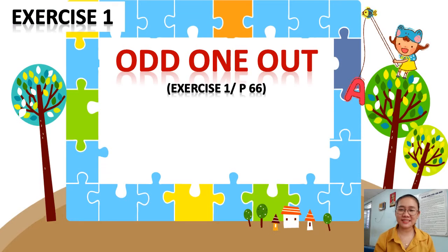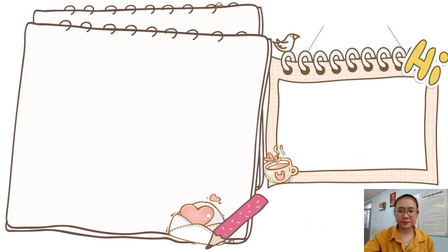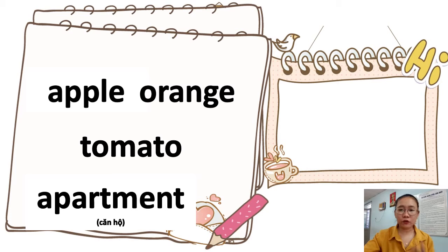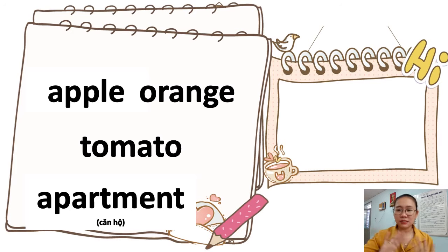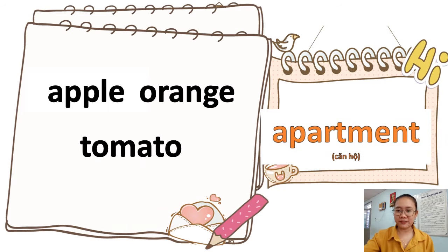Exercise 1 on page 66: we will have four pictures and you must find the one that is different. For example: apple, orange, tomato, and apartment. Apple, orange, and tomato are fruit, but apartment is not food — so apartment is different. Can you see it? Yes!